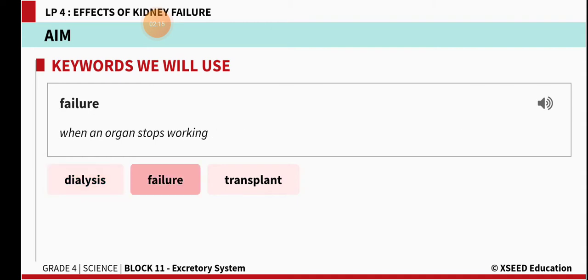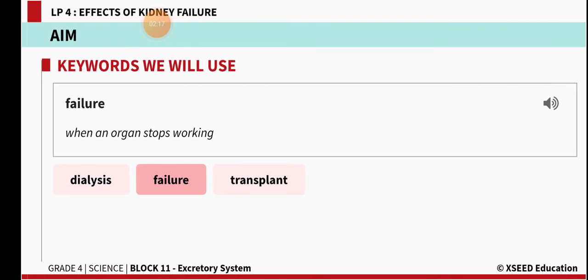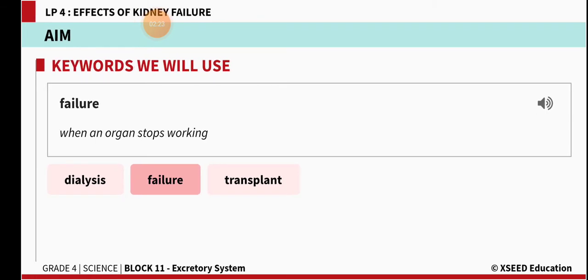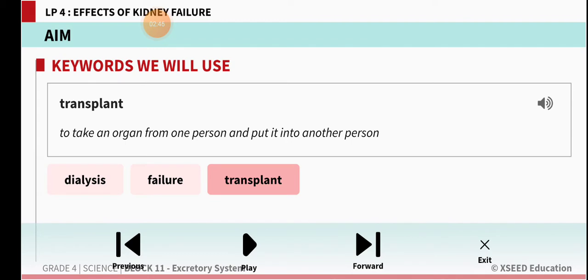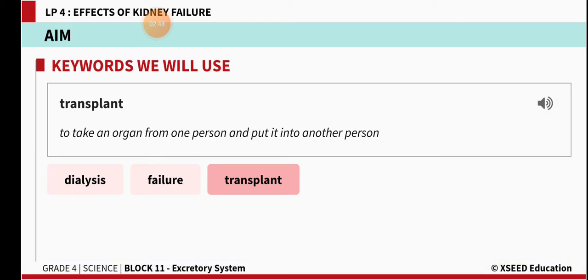The next keyword is failure — when an organ stops working, that is known as failure. The third keyword is transplant — T-R-A-N-S-P-L-A-N-T. Transplant means to take an organ from one person and put it into another person's body.